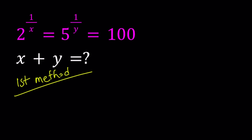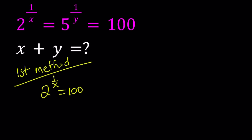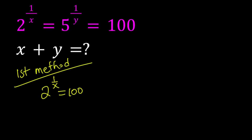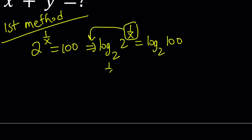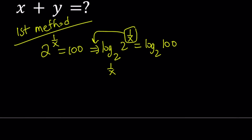For the first method, I'm going to set 2 to the power 1 over x equal to 100. Then, by using the definition of logarithms — or logging both sides with base 2 — log base 2 of 2 to the power 1 over x equals log base 2 of 100. Moving the 1 over x to the front, and since log base 2 of 2 equals 1, we get 1 over x equals log base 2 of 100.